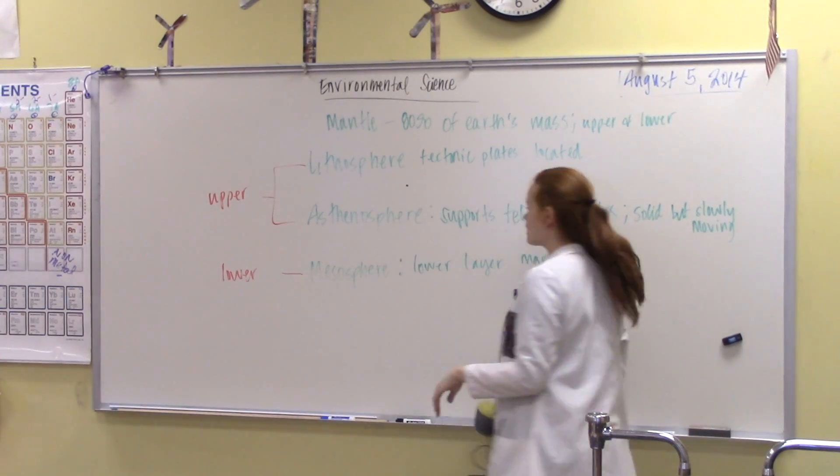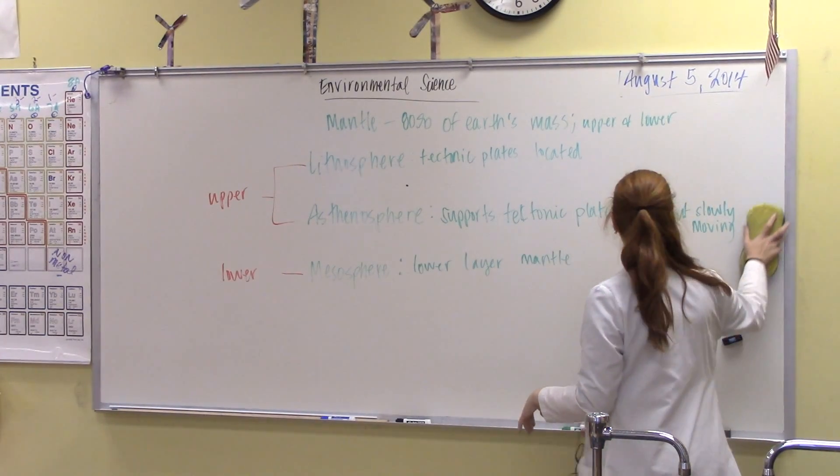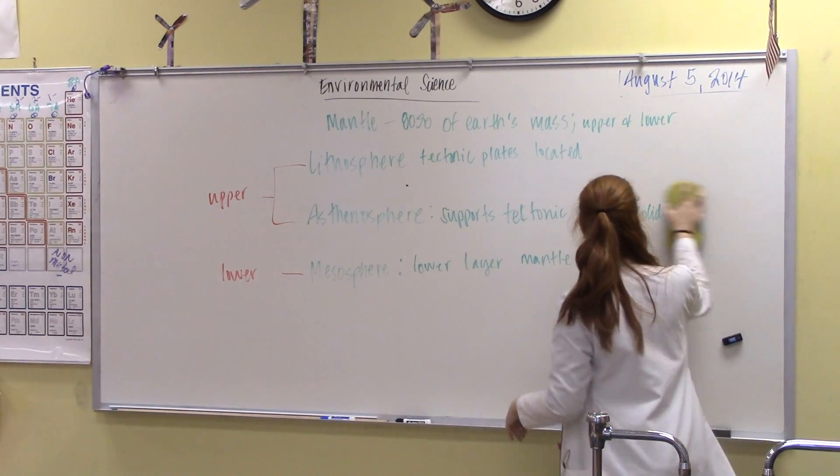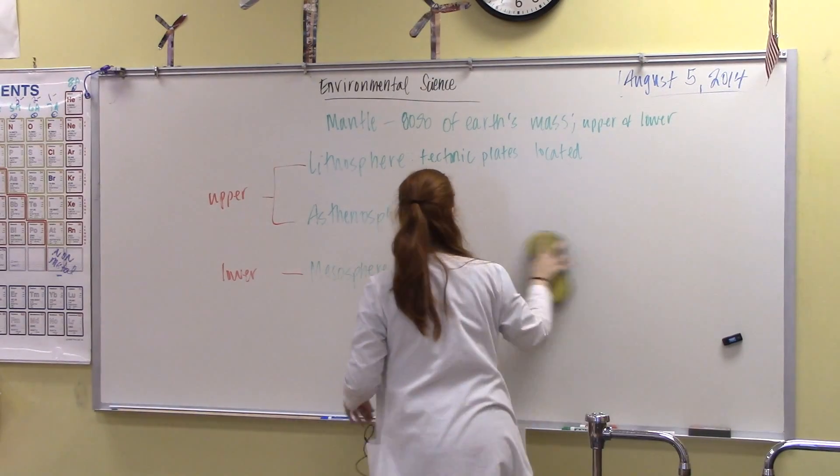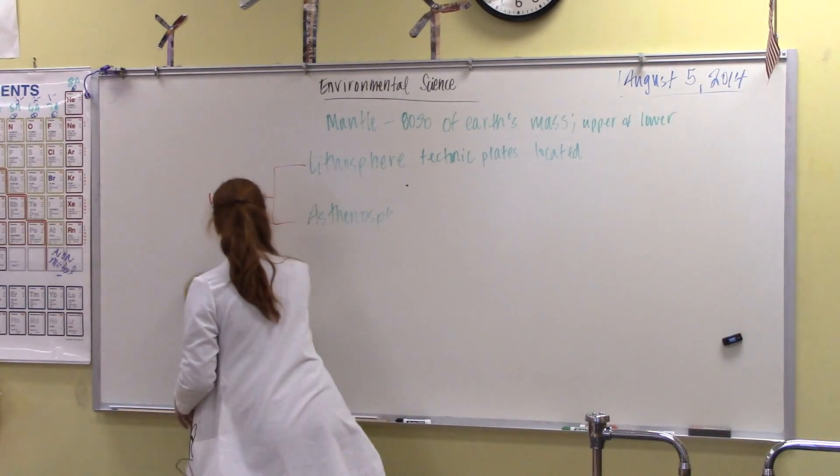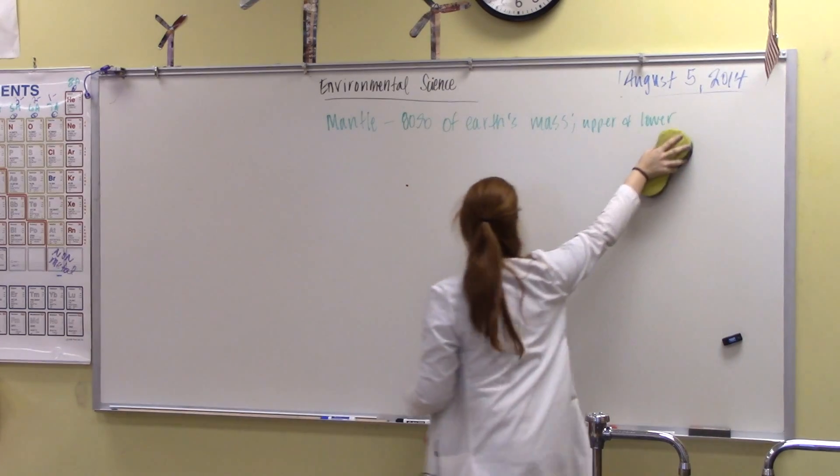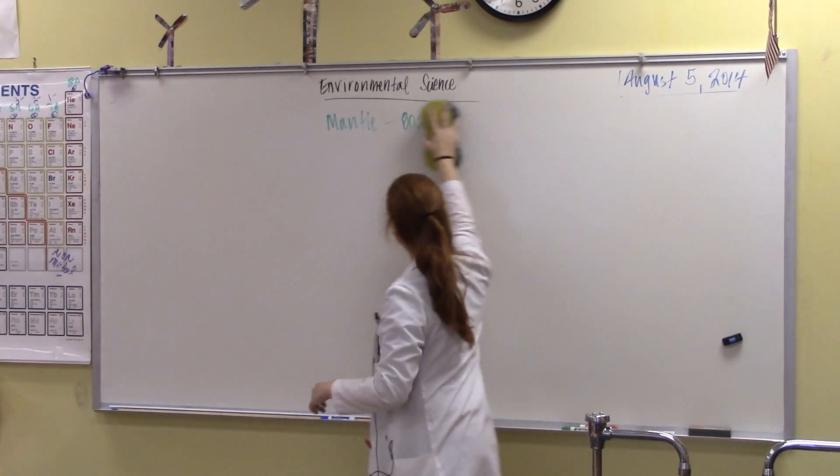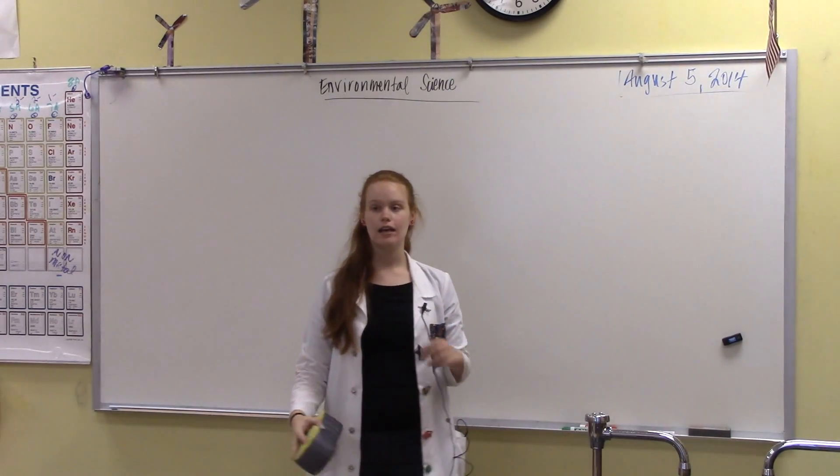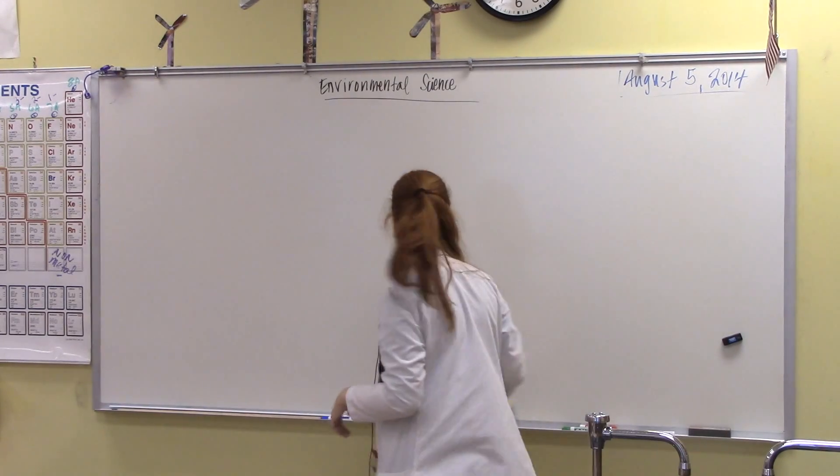We are going to move on to the last section of the layers of the Earth, which is the core. Now, most people say, oh yeah, the core. That is so cool. That is just the core, right? No. There is another part of the core, which is the outer core and the inner core.